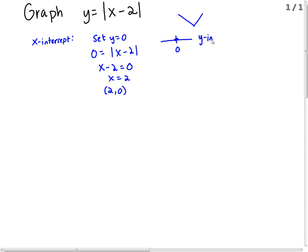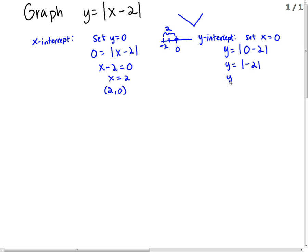Let's find the y-intercept. To find the y-intercept, we set x equal to 0. So y equals the absolute value of 0 minus 2, which is the absolute value of negative 2. Absolute value is the distance between 0 and whatever is inside on a number line. Negative 2 is 2 away from 0, so y equals positive 2. Absolute value makes whatever is inside non-negative. So we have a y-intercept of (0, 2).